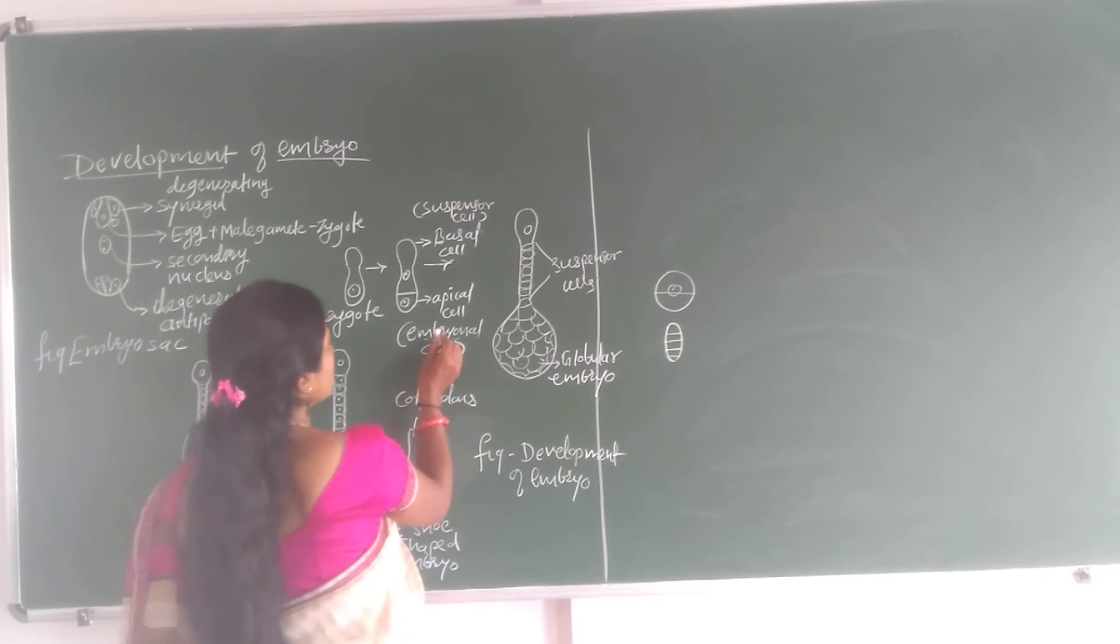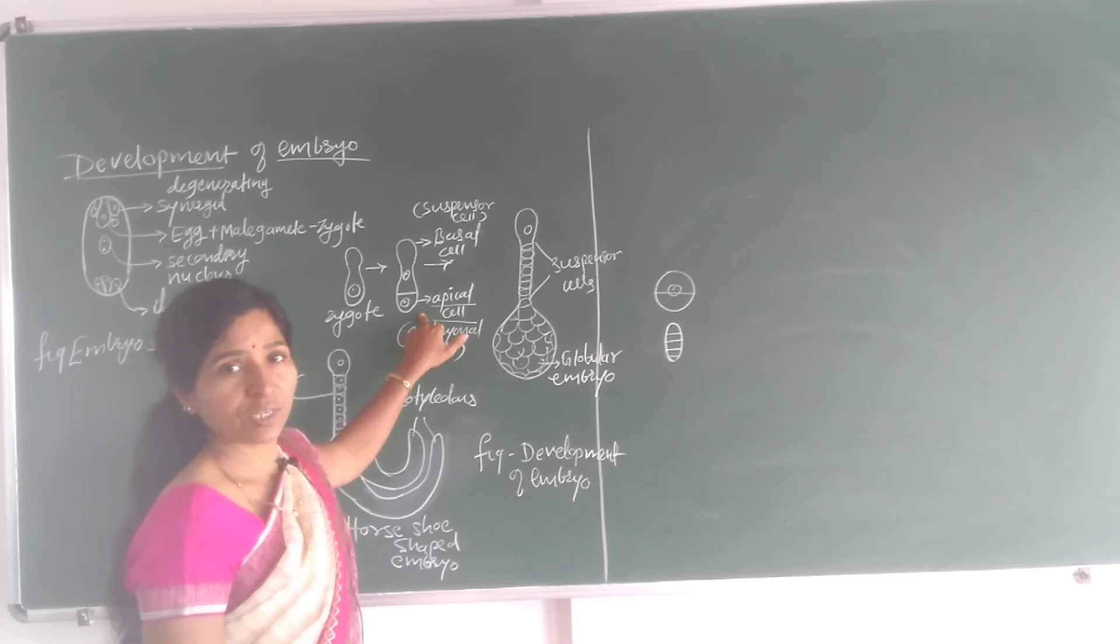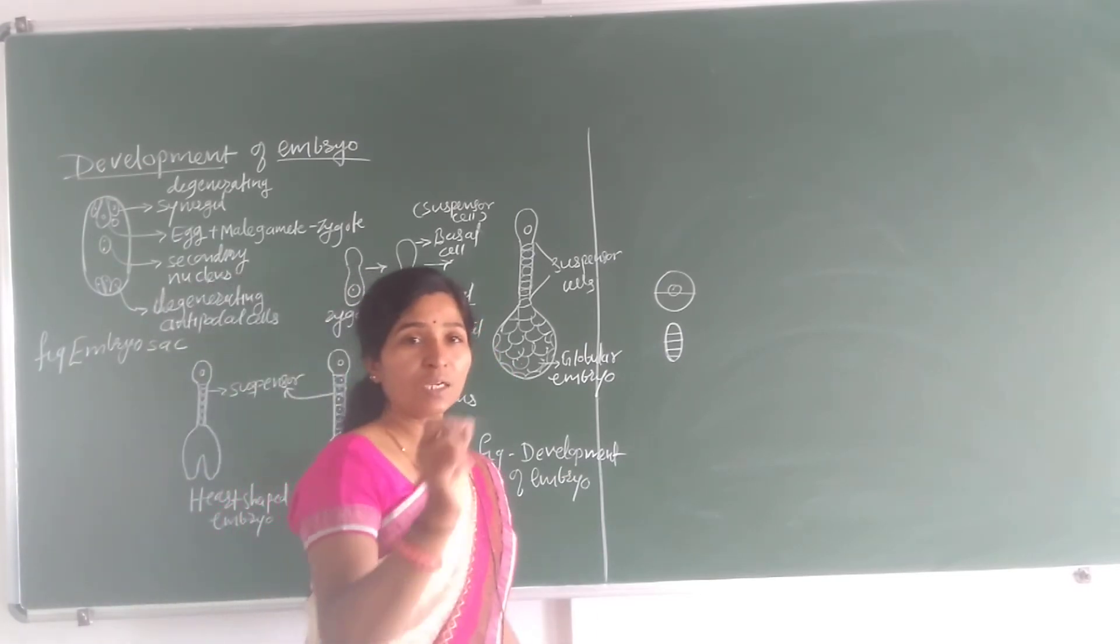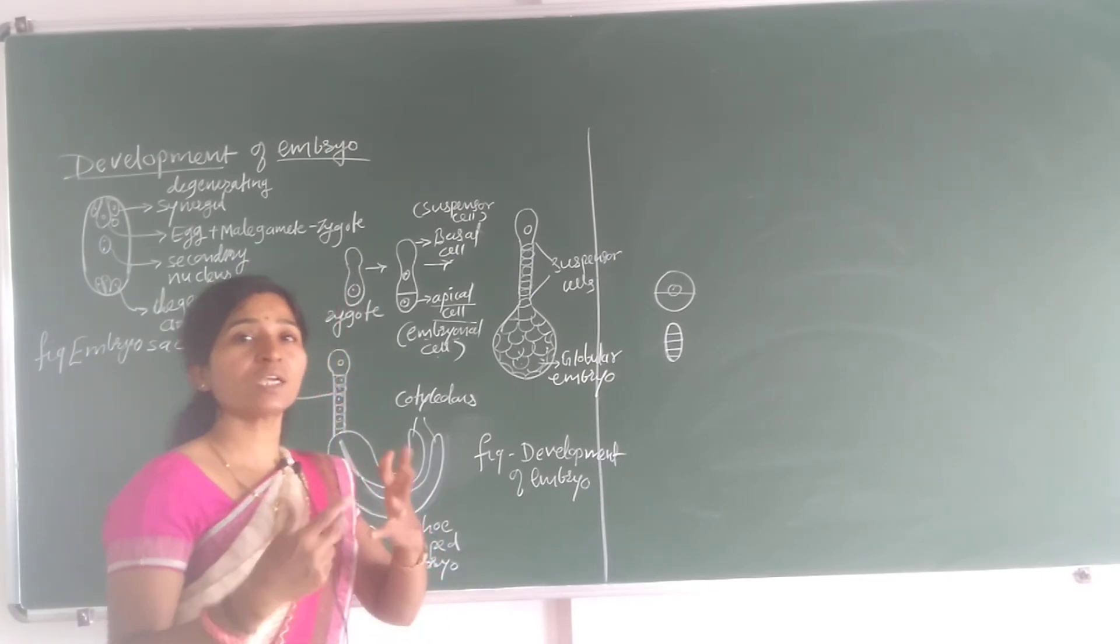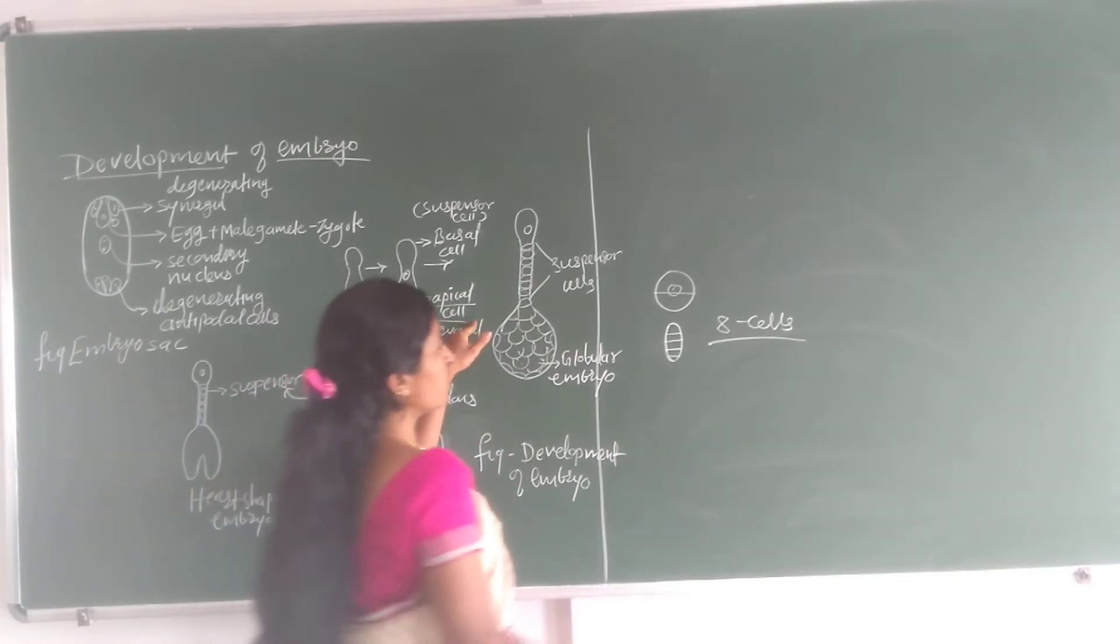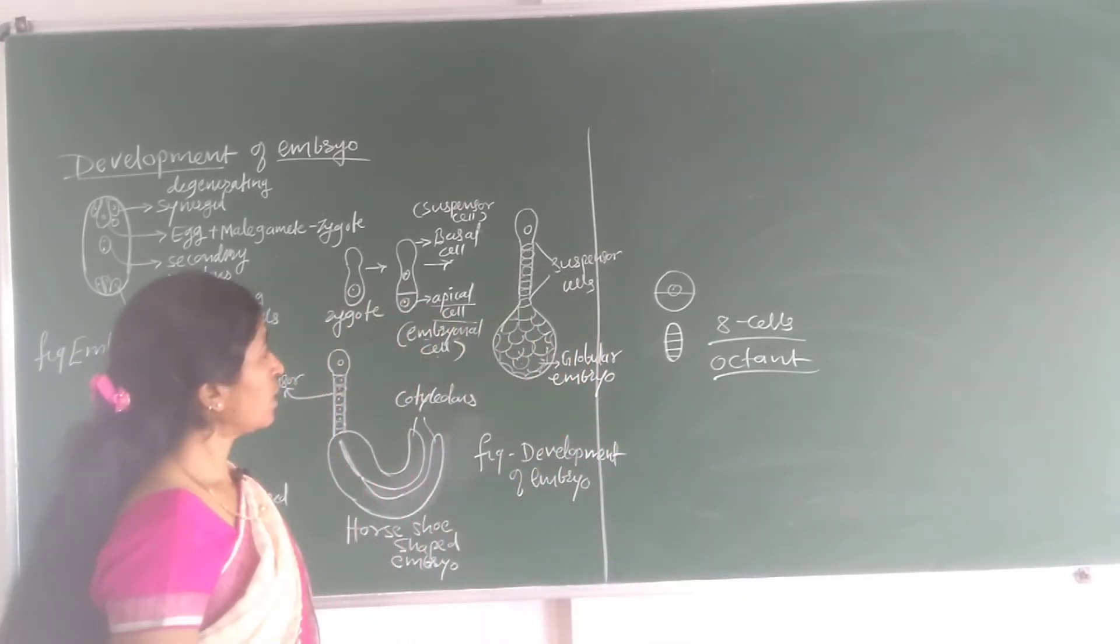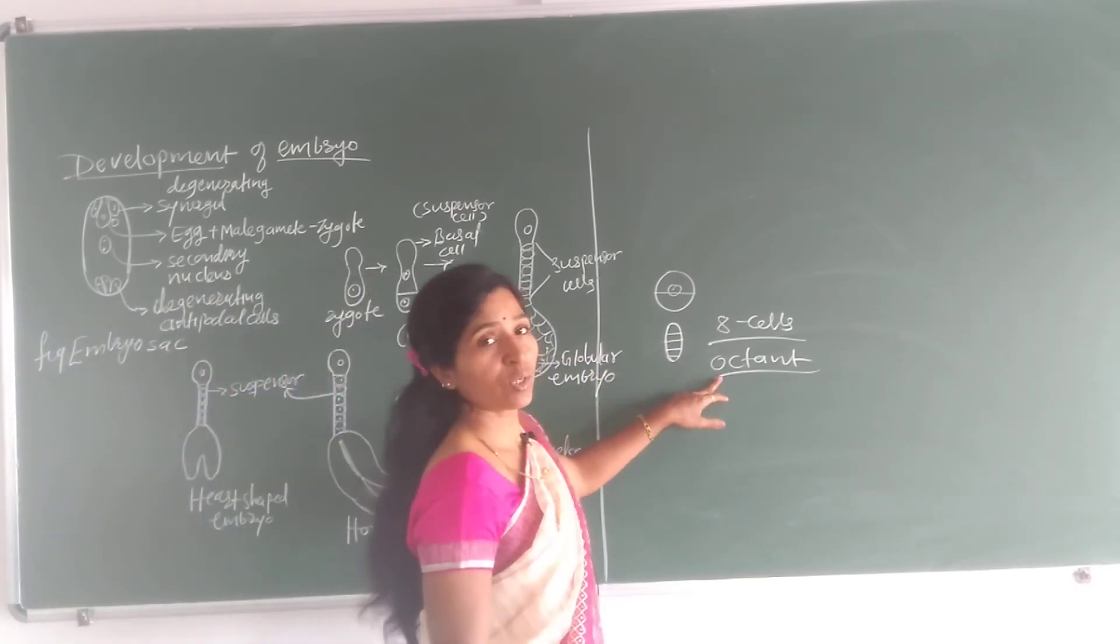Then this embryonal cell or apical cell undergoes a transverse division and vertical divisions. One transverse and two vertical divisions take place in the apical cell. Apical cell has one transverse division and two vertical divisions. And these two vertical divisions are at right angles to each other and form eight cells. Form eight cells from this apical cell. This stage is called the octant stage. And this is nothing but an embryo proper. From that we observe an embryo proper. The eight cells structure, the octant structure, the embryo proper.